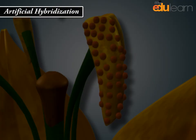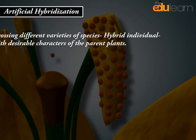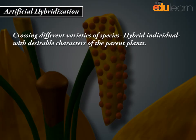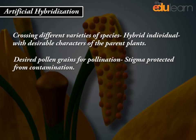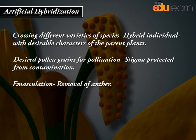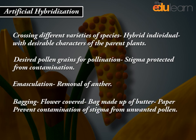Artificial hybridization involves crossing different varieties or species to produce a hybrid individual with desirable characters of the parent plants. Desired pollen grains are used for pollination, and the stigma is protected from contamination. Emasculation is the removal of the anther. Bagging involves covering the flower with a bag made of butter paper to prevent contamination of the stigma from unwanted pollen.